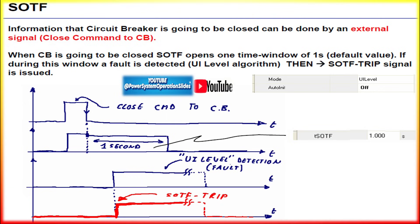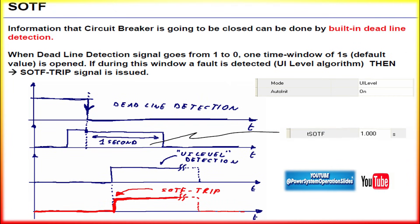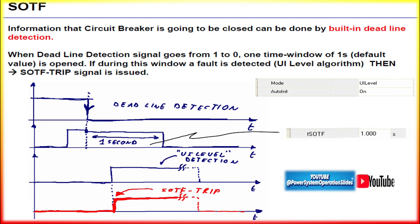As an operational example: suppose a transmission line is under maintenance and the circuit breaker is open. A fault occurs on the line — e.g., a fallen tree causing a short circuit. When maintenance is finished and the operator attempts to close the breaker, the SOTF logic recognizes that the line is still faulted. Upon breaker closure, the relay detects high fault current and low voltage immediately and sends a trip command within milliseconds to reopen the breaker, thereby protecting the system from damage.